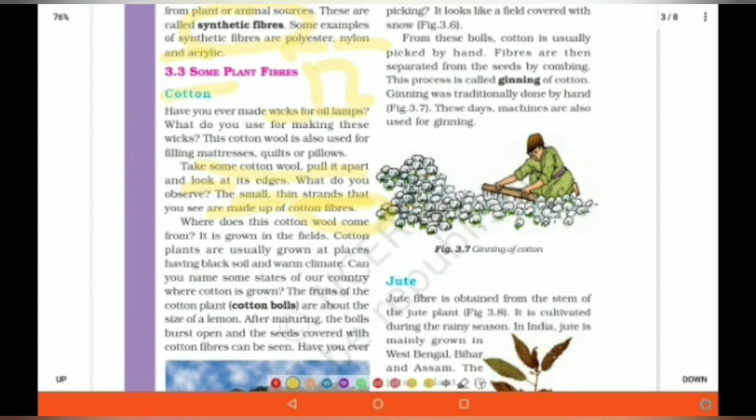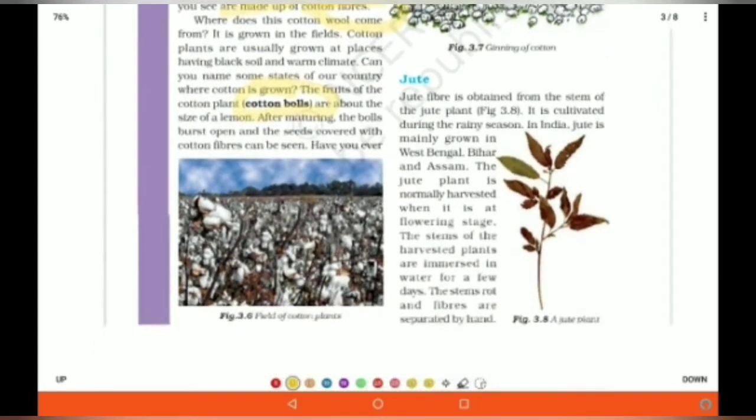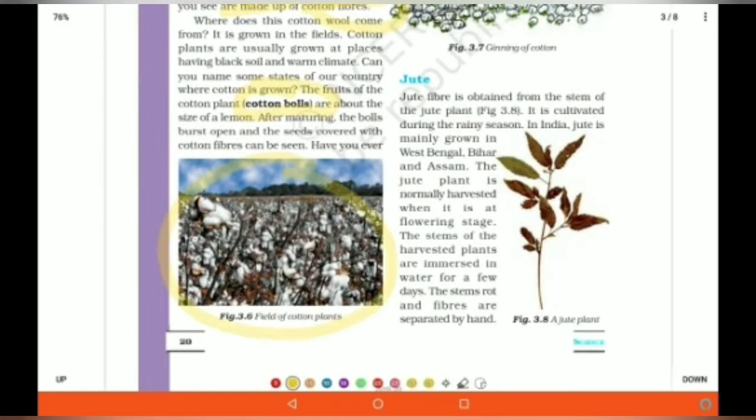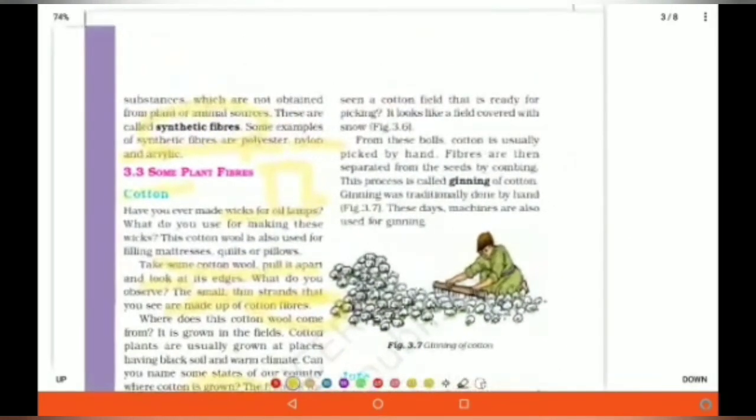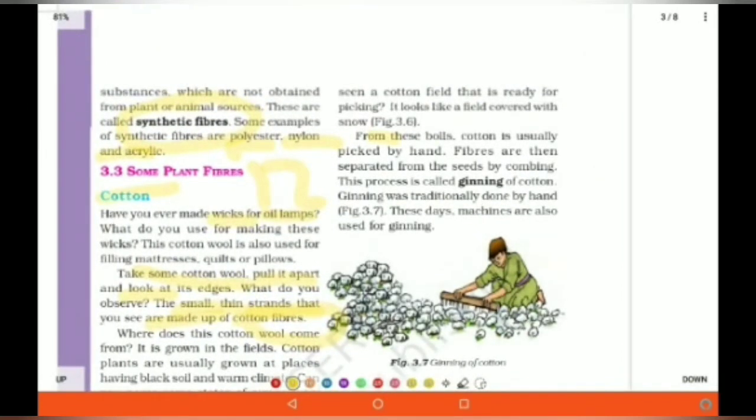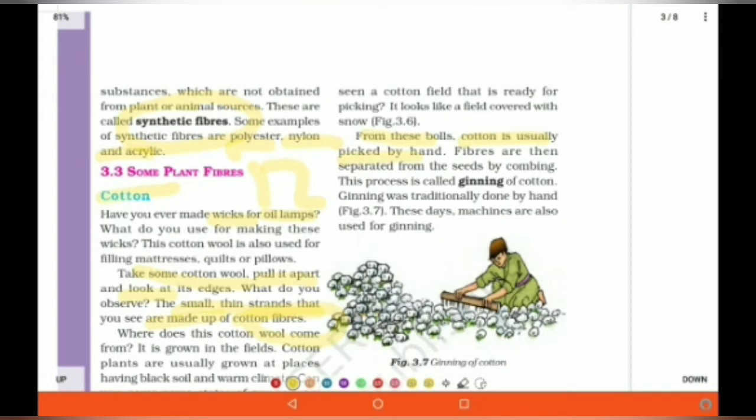From where do we get the cotton? From the cotton plant or specifically from cotton balls. Now, this is how the cotton balls look like when they are perfectly ripe. From these balls, cotton is usually picked up by hand. Fibers are then separated from the seeds by combing.